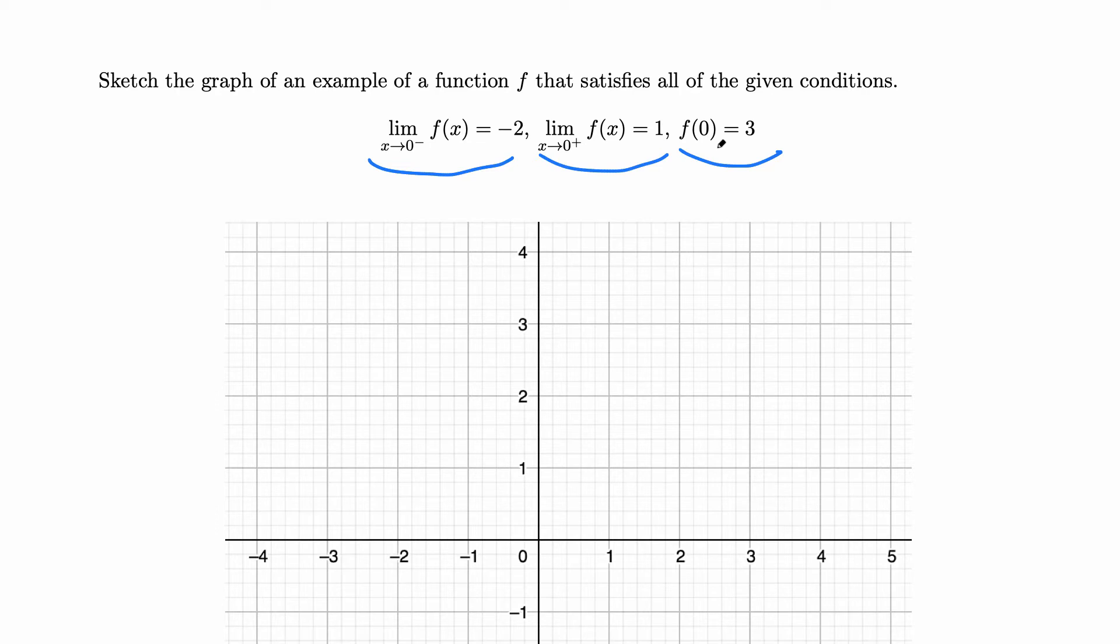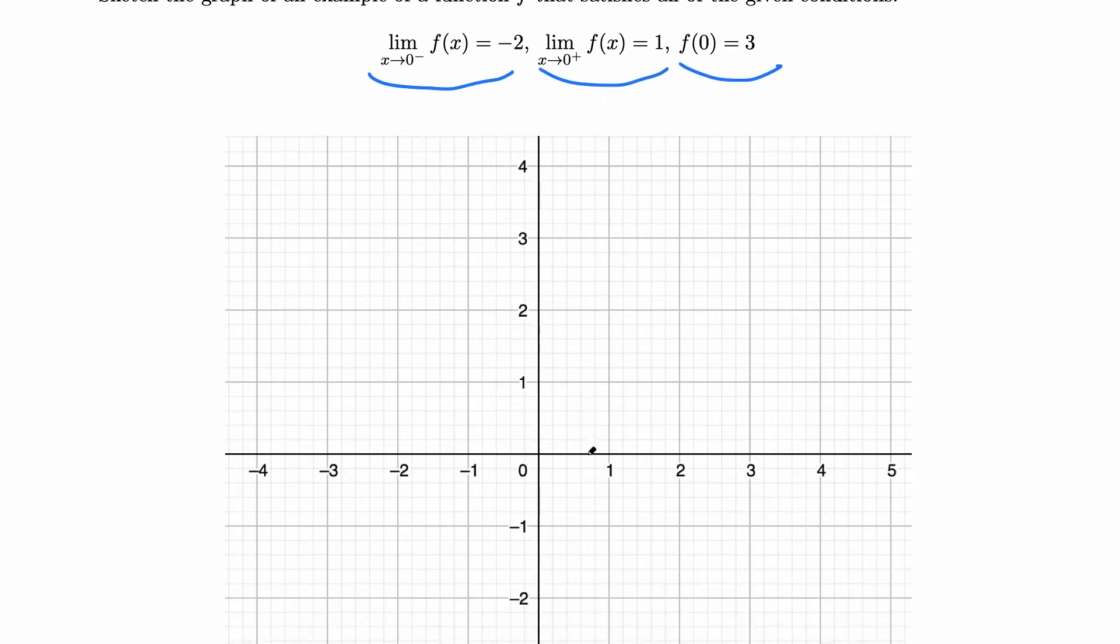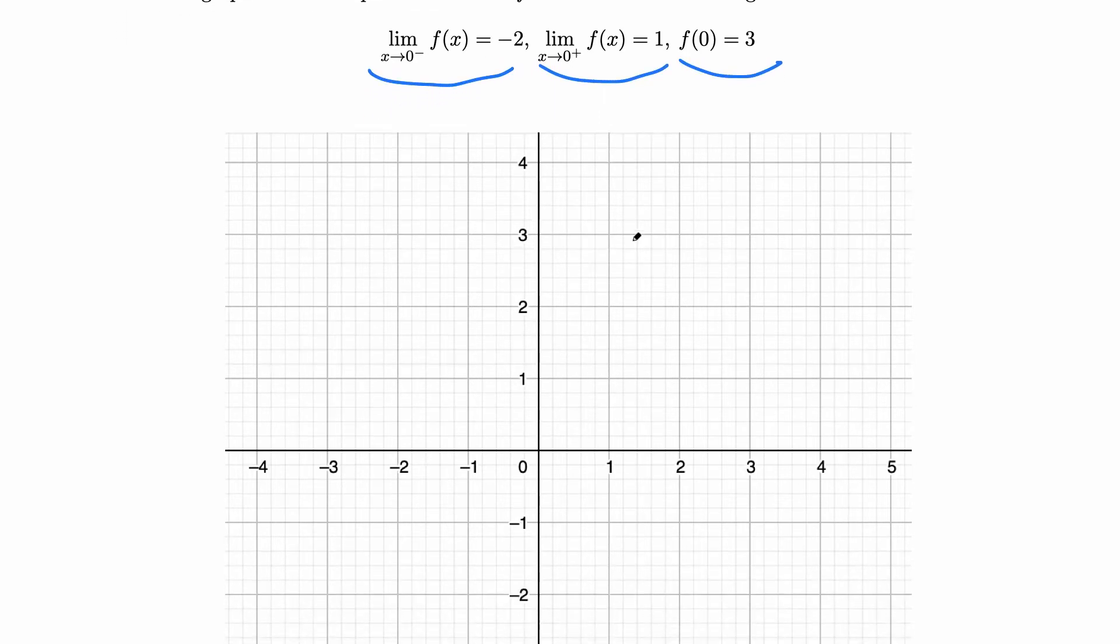So let's draw the last part. At exactly x equals 0, when x is exactly 0, the function value is 3. So this is obviously x, the function value is 3: 1, 2, 3. Function value means the y value.